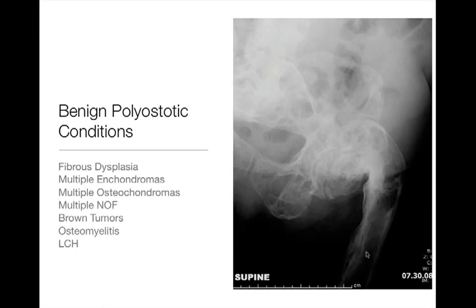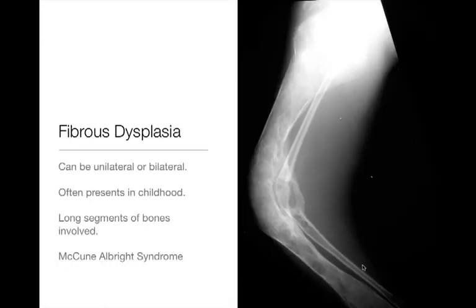Two conditions associated with polyostatic fibrous dysplasia are McCune-Albright syndrome and Mazabraud syndrome. McCune-Albright syndrome is found in girls, associated with precocious puberty and café-au-lait spots, along with polyostatic fibrous dysplasia. Mazabraud syndrome is polyostatic fibrous dysplasia associated with soft tissue myxoma — if you see multiple fibrous dysplasia lesions and an adjacent soft tissue lesion, it's a good bet that's a myxoma and the patient has Mazabraud syndrome.